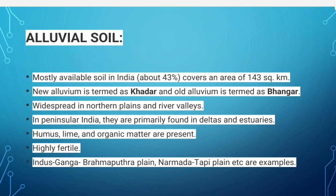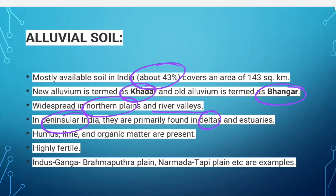Alluvial soil covers 43 percent of India. The new alluvial soil is called khadar and the old alluvial soil is termed as bhangar. It is widespread in the northern plains and river valleys, and in peninsular India they are primarily found in deltas and estuaries. The soil contains humus, lime and organic matter.